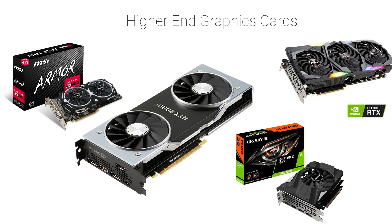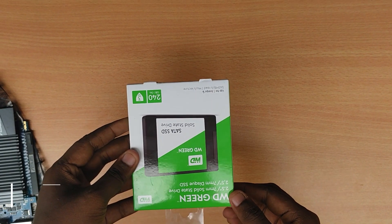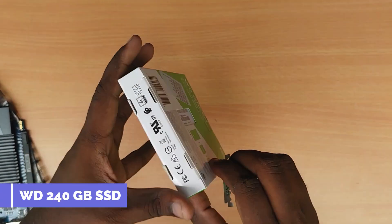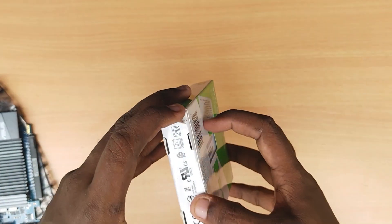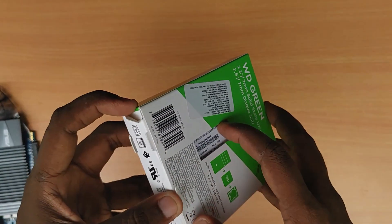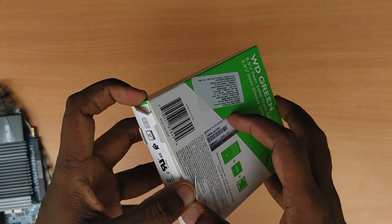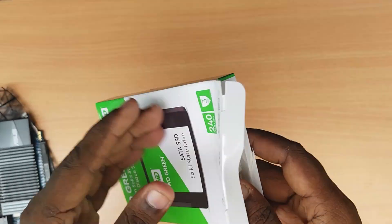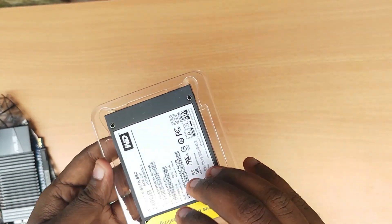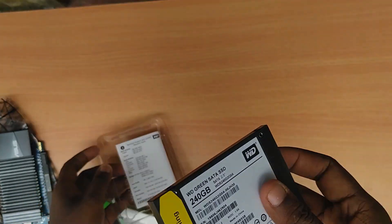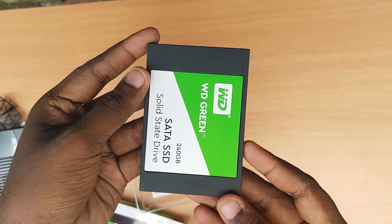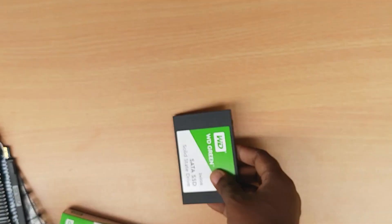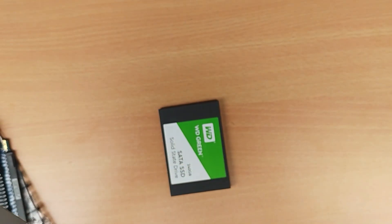For storage, use an SSD for the OS and software. An SSD or M.2 is about 10 times faster than a normal hard disk. There is an M.2 port on this motherboard, so we use a SATA SSD and a 1TB hard disk.